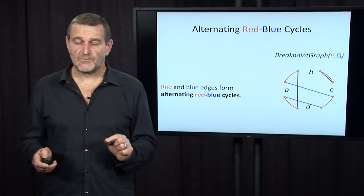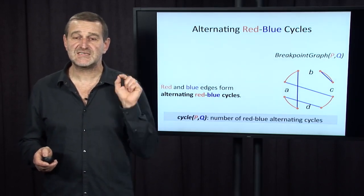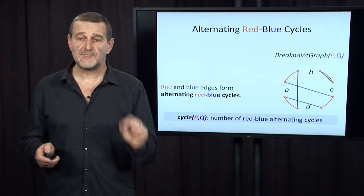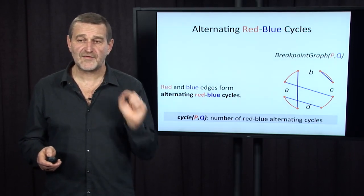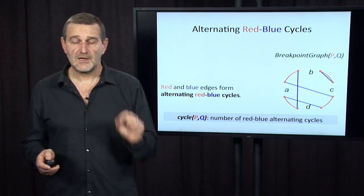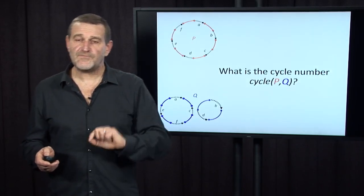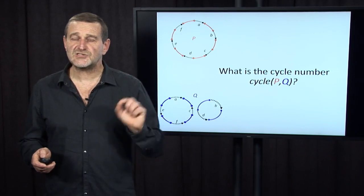We'll pay attention to one important parameter of the breakpoint graph, which is the cycle number. The cycle number is simply the number of red-blue alternating cycles in the breakpoint graph. But before I explain why we care about the cycle number, let's try an example.